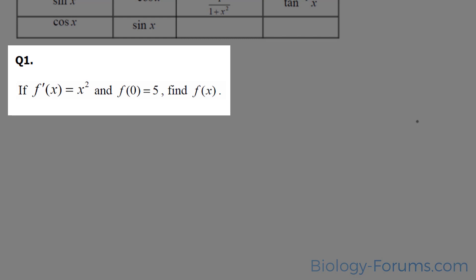Here, we are told that f prime at x is equal to x squared, and f at 0 is equal to 5. Find f at x.